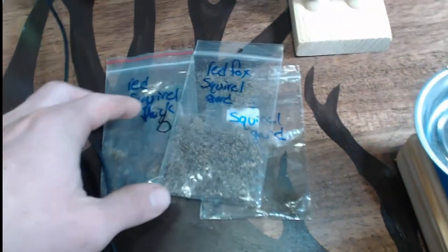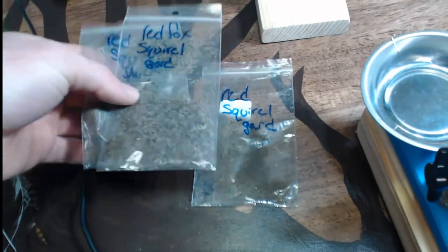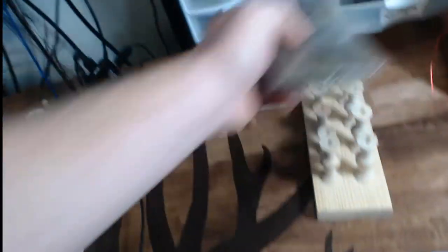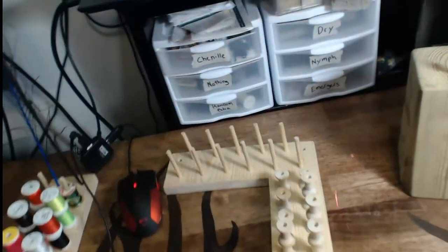Depending on if I want it to float, a lot of different types of fur you can cut up and make your own dubbing out of. I have rabbit, different things like that. But that's a quick overview of all of my tools.